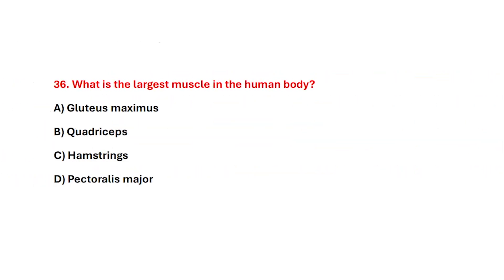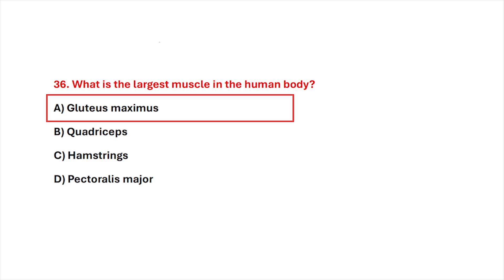Question 36. What is the largest muscle in the human body? Correct answer is option C, gluteus maximus.